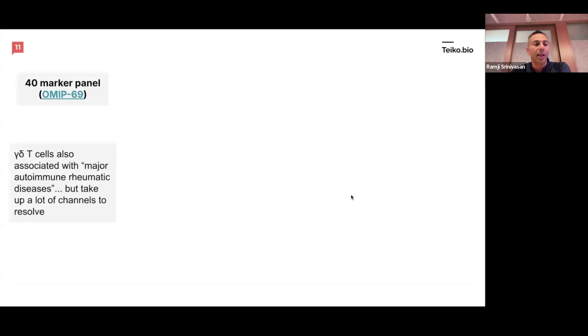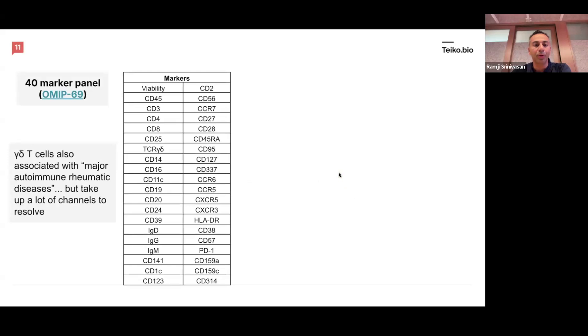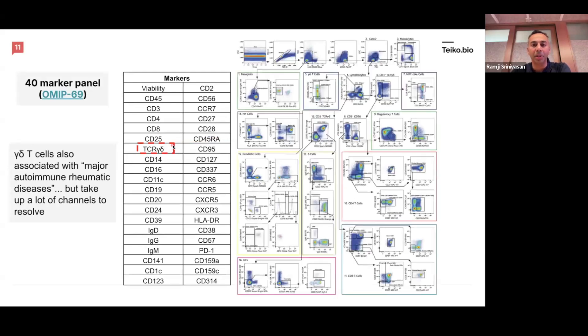So let's see this in action. This is a 40 marker panel that came from OMIP-069, and the researchers mentioned gamma delta T cells, which are associated with major autoimmune rheumatic diseases. We covered this in a previous spectral flow webinar. They basically take up a lot of channels to resolve. This was the 40 marker panel they used, and you can see our friend gamma delta over here. And if you go to the actual gating plot, which is quite complex, you need to get to many cells, 1, 2, 3, 4, 5, 6, 7, 8, around there to get to gamma delta T cells. So it's quite complex to actually resolve this.